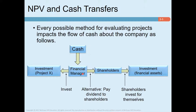If the manager decides that cash goes to shareholders as dividend, shareholders will invest this money in financial assets. If the manager instead decides to invest this money in a project, that investment is not free of cost. The cost of that investment is the rate of return shareholders could have earned by investing in financial assets — that is, the rate of return shareholders forgo because the manager chose to invest in the project.